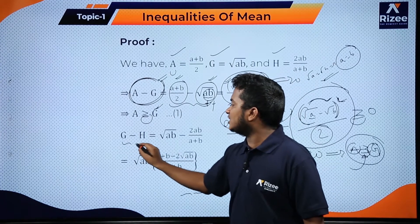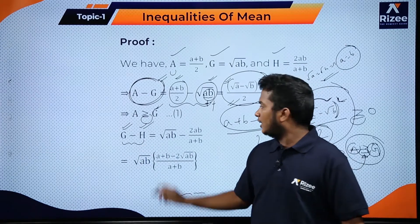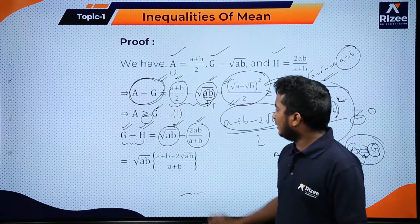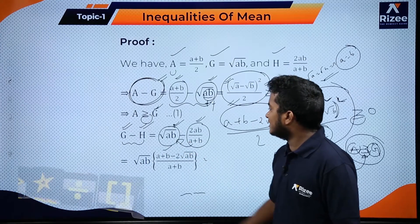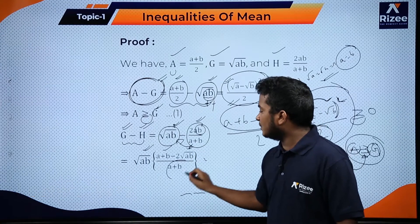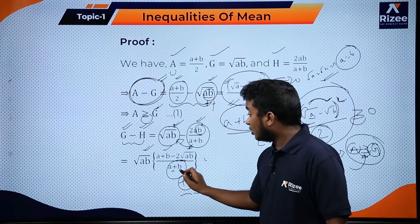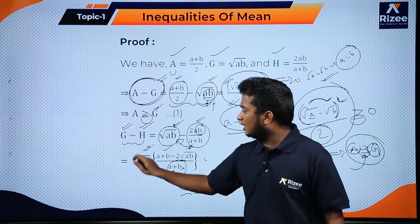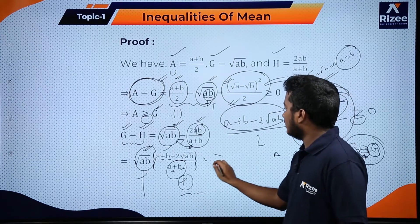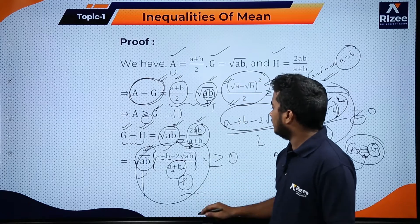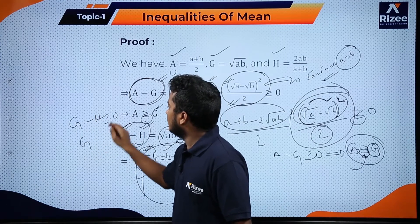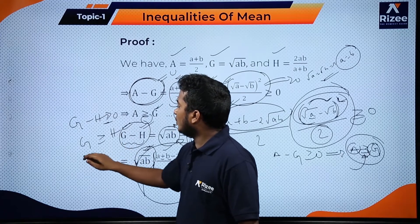Similarly, calculating G − H, where G = (ab)^(1/2) and H = 2ab/(a+b). Taking √(ab) as a common factor and simplifying, the numerator becomes (√a − √b)² and the denominator (a+b) is positive. Since all terms are positive, G − H ≥ 0, so GM ≥ HM.